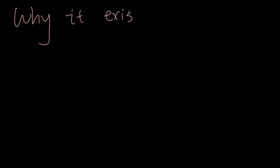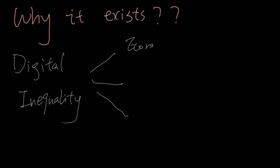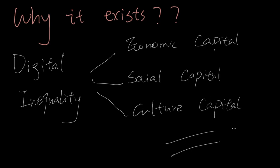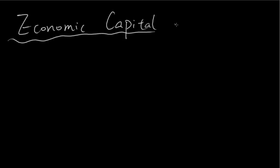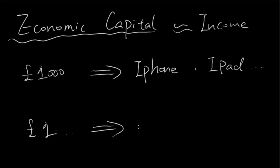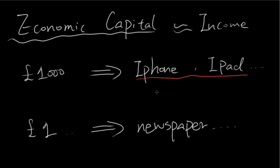And why does it exist? Digital inequality consists of social, cultural, and economic capitals by his first argument. First is economic capital. Economic capital can be understood as income. The amount of income determines what electronics you can use, because a user with an economic foundation can get more digital information from new technology, while users without an economic foundation feel more and more inconvenience in this generation.